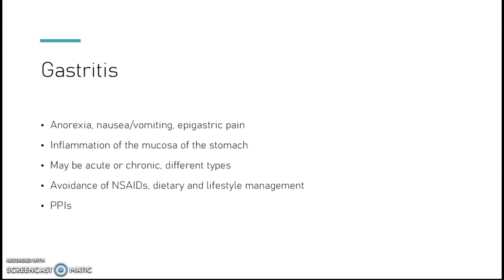Gastritis is inflammation of the stomach lining. You'll see patients with anorexia, nausea, vomiting, and epigastric pain. It can be acute or chronic, and there are many different types — know the different types of gastritis. Avoid NSAIDs as they will irritate the stomach. Talk about dietary and lifestyle management: alcohol, smoking, and coffee will all irritate it. Treatment is PPIs.